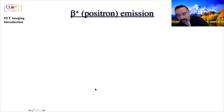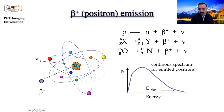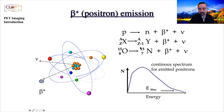Let's talk about some of the fundamentals and physics of positron emission, because that's what PET stands for. In positron emission, you have a parent radionuclide that emits to a daughter radionuclide. In this process a positron is emitted, and essentially a proton has been changed to a neutron — that's why the total atomic mass remains the same. You emit a positron and a neutrino.